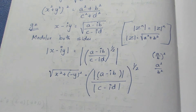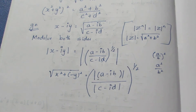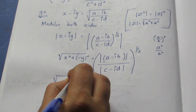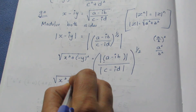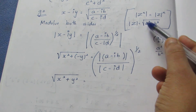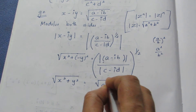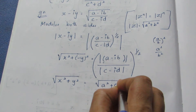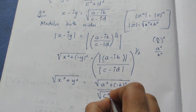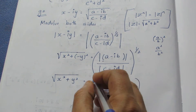Now we know that for modulus we can write in root form. Applying the formula modulus z equals root of a square plus b square, this becomes root of (a square plus b square) by root of (c square plus d square), the whole power half.